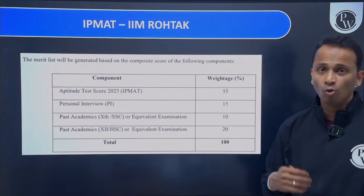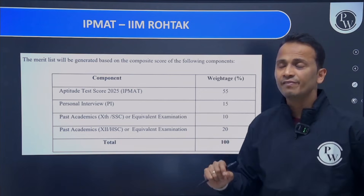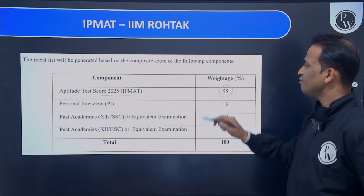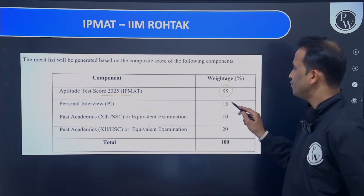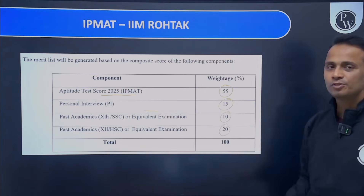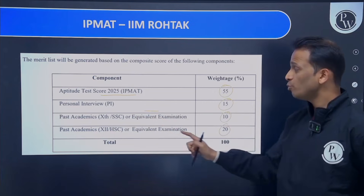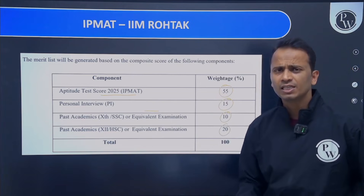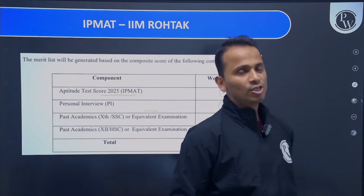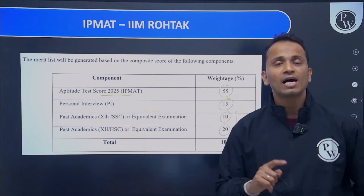Unlike Indore, here weightage is given to 10th and 12th scores. The written aptitude test carries 55% weightage, the personal interview carries 15%, the 10th standard score carries 10%, and the 12th standard score carries 20% weightage in the final merit list. So board examination results play a very important role — a total of 30% weightage is given to academics.